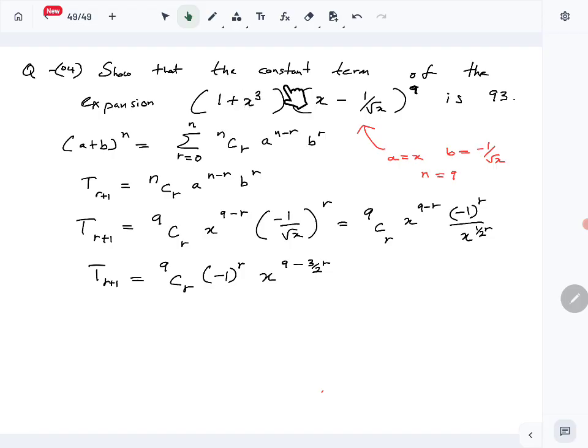So then this also will be multiplied by what, 1 and X cube. So when you multiply it by 1, you get this term. So 9CR minus 1 to the R, X 9 minus 3 halves R, that is when you multiply by 1. So then for this one, when does it have a constant term? It has a constant term when this exponent is equal to 0.